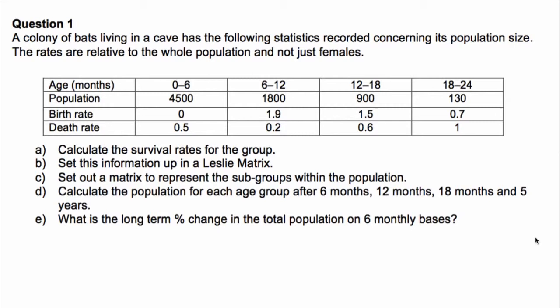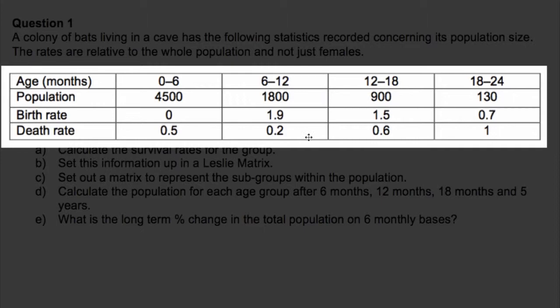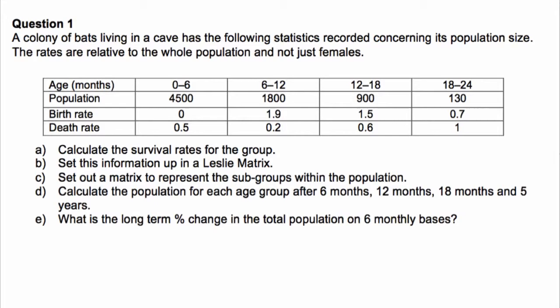Now let's look at a question about a colony of bats living in a cave. The generations are six months long, so each matrix multiplication represents a six-month period. This is relative to the whole population, not just females. We have population numbers, birth rates, and death rates — be careful, these are death rates. So 50% of the bats aged 0–6 months die, meaning 50% survive. 20% die in the 6–12 month group, so 80% survive. The survival rates for our Leslie matrix are 0.5, 0.8, 0.4, and 0.0.